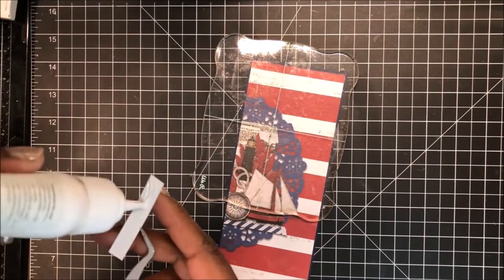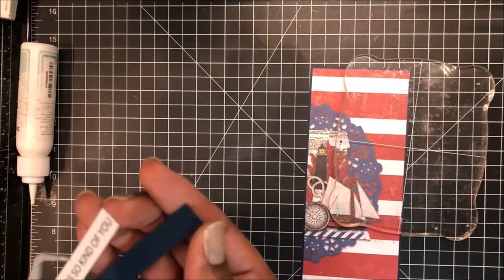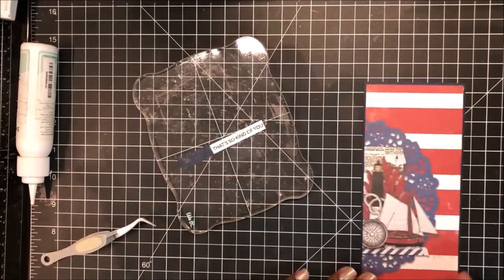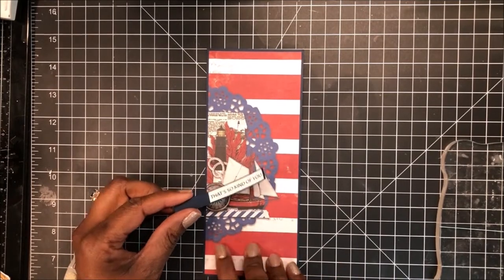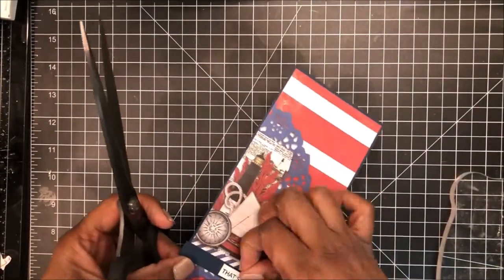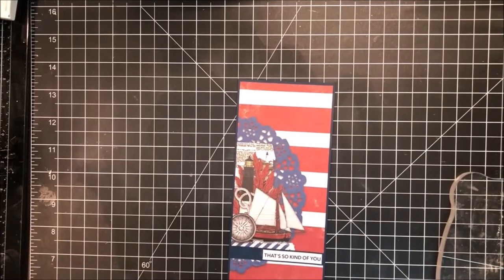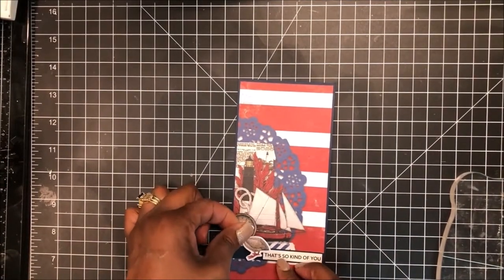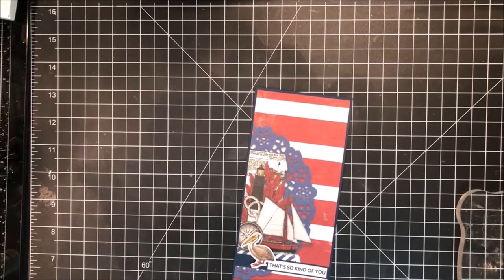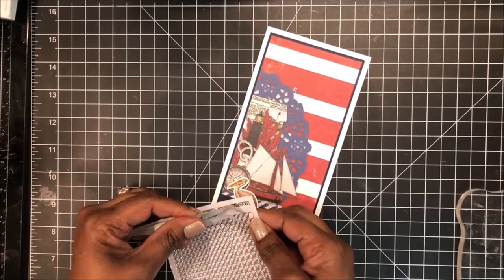So now I'm putting liquid glue onto a sentiment from that same creative expressions set and mounting that onto a three eighth inch strip to mat it. And then we'll place this directly onto my focal panel. And here I will bring in my scissors and trim off that edge of that strip. And then I bring in my pelican and I have popped that up on foam tape and we'll place that right next to my sentiment.